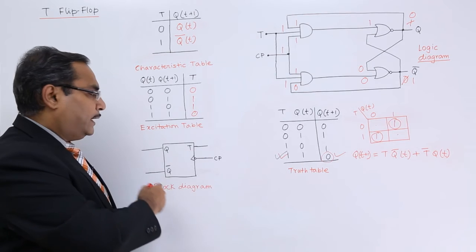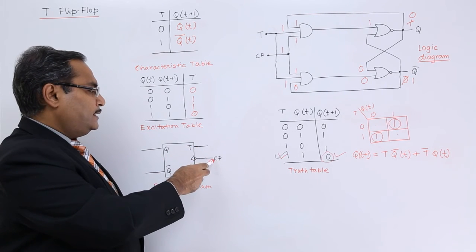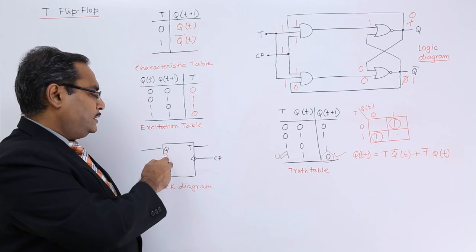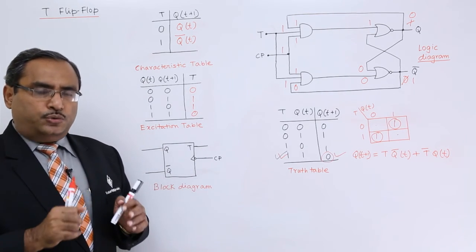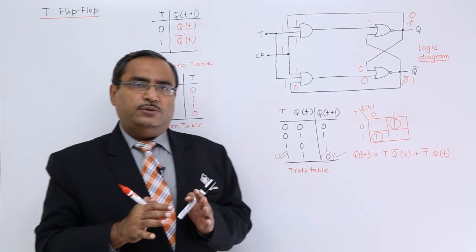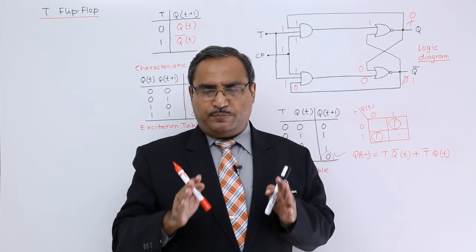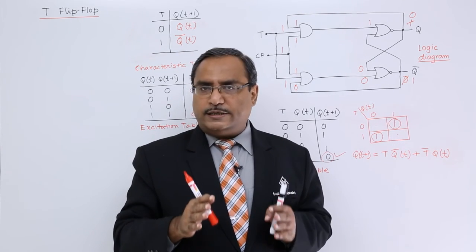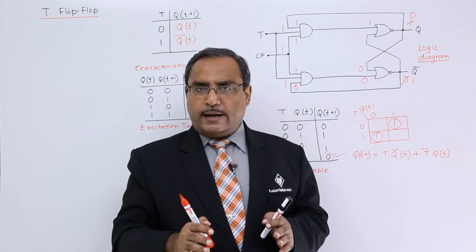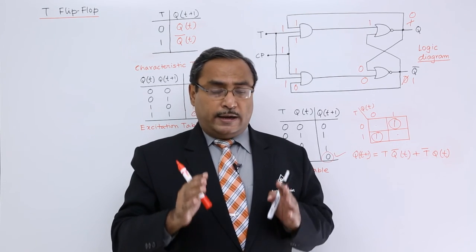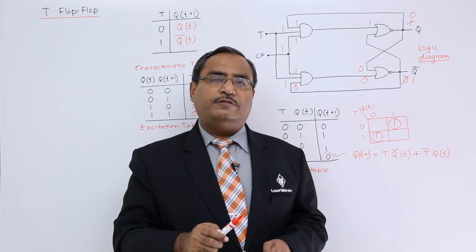This is the block diagram. Here we have only a single input T, this is the clock pulse CP, and these are Q and Q̄ — that is the block diagram of T flip-flop. In this session we have discussed how to deal with this T flip-flop and what is the characteristic equation, truth table, logic diagram, block diagram, characteristic table, and excitation table of T flip-flop.